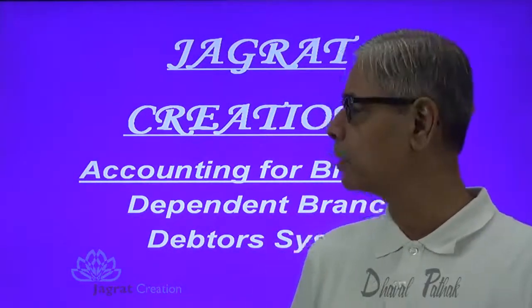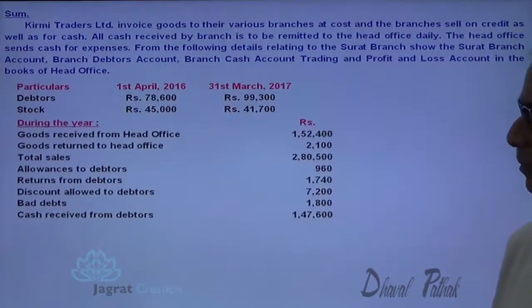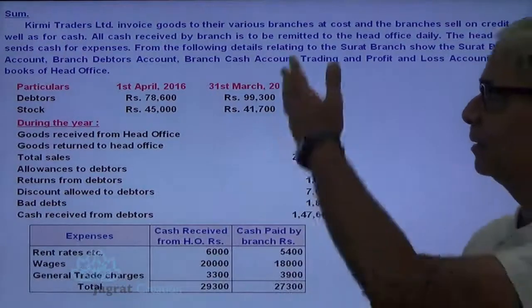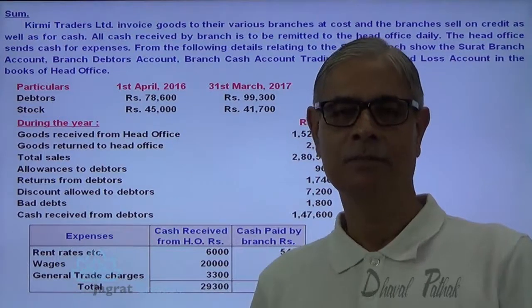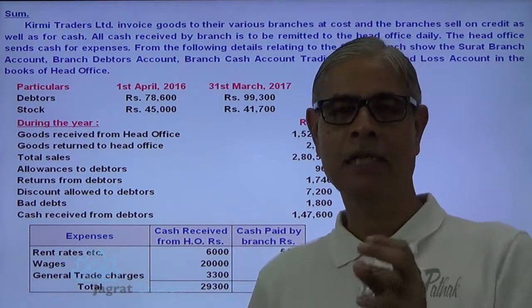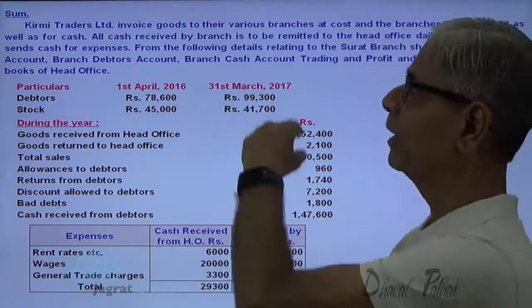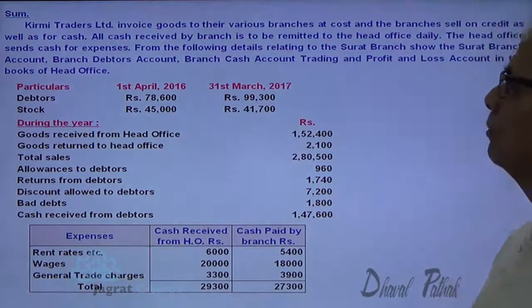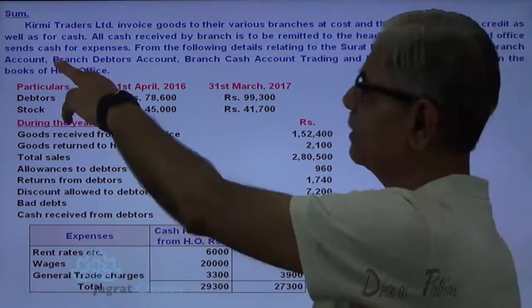Observe the sum that I intend to solve here before you on the screen. The same sum I have solved and explained in my previous video, but there is a difference that I am bringing to your notice. Creamy Traders Limited invoices goods to their various branches at cost, and the branch's sales are on credit as well as for cash.